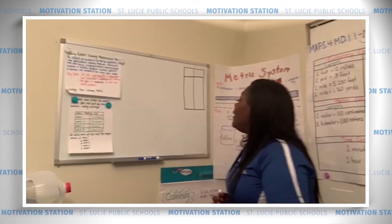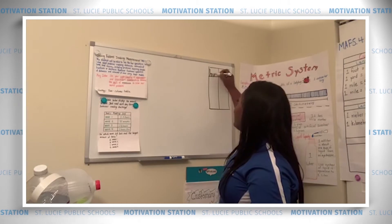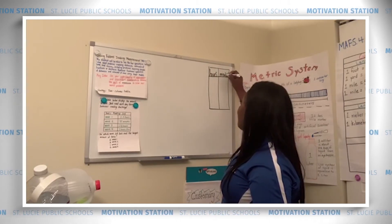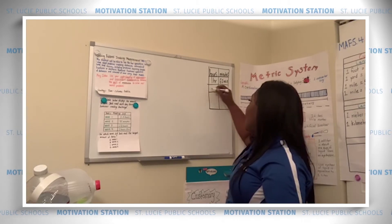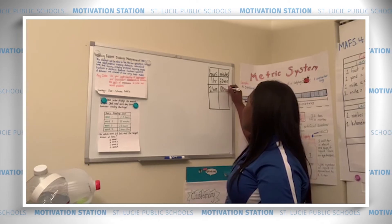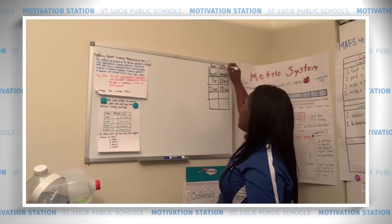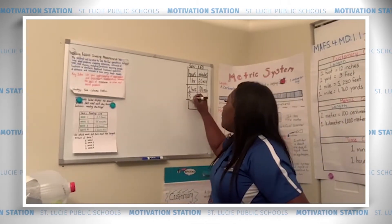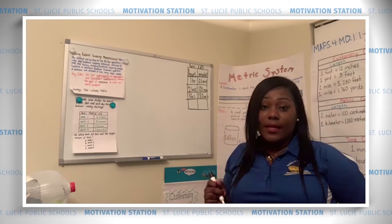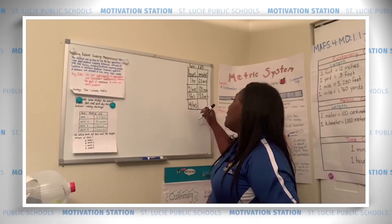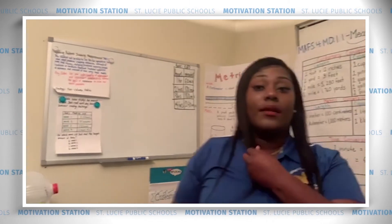We're going to use the two-column table to convert minutes and hours, beginning with the larger unit. We know that one hour is equivalent to 60 minutes, and two hours is equivalent to 120 minutes. When converting hours to minutes, the rule is: multiply by 60. So three hours equals 180 minutes, because 3 times 60 is 180, and four hours equals 240 minutes, because 4 times 60 is 240.